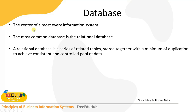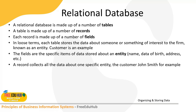The database is the center of almost everything in an information system. The most common database is a relational database — a series of related tables stored together with a minimum of duplication to achieve a consistent and controlled pool of data. A relational database is made up of a number of tables, and we maintain information related to each specific entity in those separate tables.